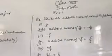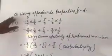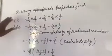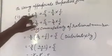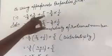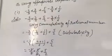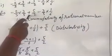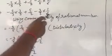Class 8, Subject Mathematics, Exercise 1.1, NCERT, Question No. 1 — using properties, find the values. Question No. 1: minus 2 upon 3 into 3 upon 5 plus 5 upon 2 minus 3 upon 5 into 1 upon 6. Now, solution is: minus 2 upon 3 into 3 upon 5 plus 5 upon 2 minus 3 upon 5 into 1 upon 6.